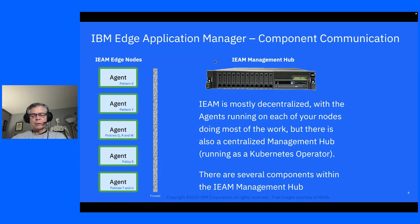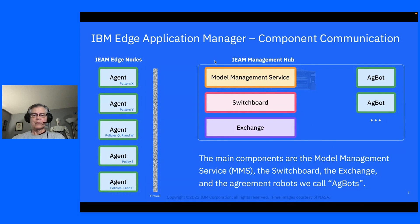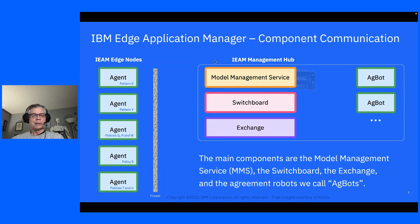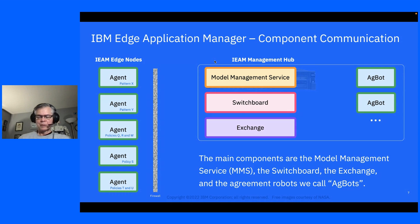There are several components within the management hub. The primary ones are: the model management service, the switchboard, the exchange, and a group of agreement robots called AgBots. There are other components as well, like HashiCorp Vault integration which is our secret manager, and code for secure device onboarding. But these are the primary ones I'll discuss with our communications.